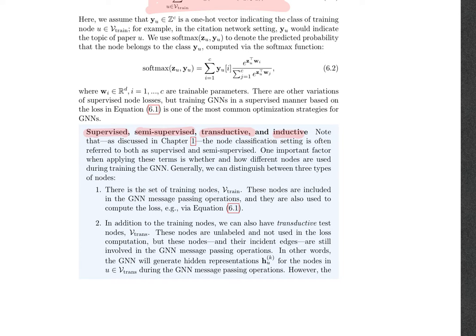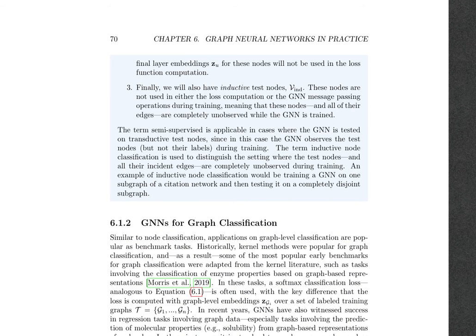There are generally three types of nodes. First, you have a set of training nodes, V_train. These nodes are involved in the message passing used to train the graph neural networks, and they're also used to compute the loss. In addition, you can have transductive test nodes, V_trans. These nodes are unlabeled and not used in the loss computation; however, their incident edges are involved in the message passing operations. This means that during training, representations are generated for these nodes, but their final labels are not used. Finally, there are inductive test nodes, which are not used in loss computation or in the GNN message passing at all — for example, an entirely different graph used with a trained GNN.